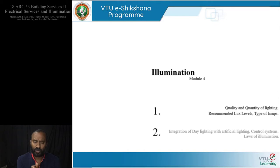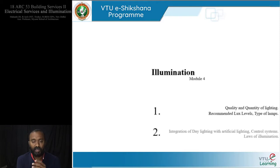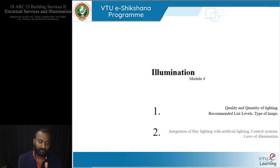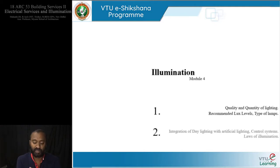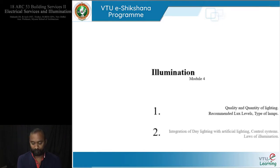This module covers two major subheadings: first, quantity and quality of lighting, and recommended lux levels and types of lamps. The second part of this module moves on to integration of daylighting with artificial lighting, control systems, and laws of illumination.